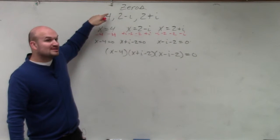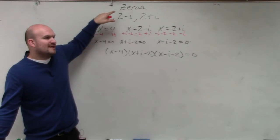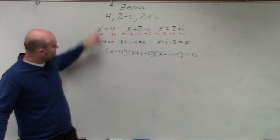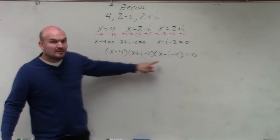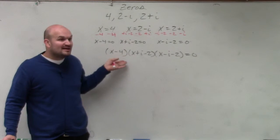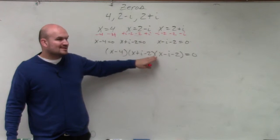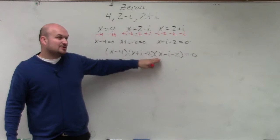That's why I said, when 3 was a zero, how did we quickly know what the factor was? It's x minus 3, right? You can quickly figure out, if you're given a zero, what the factor is. Now, we have to multiply these to get the polynomial. So there's a quick step to do this, or an easier way to do this.